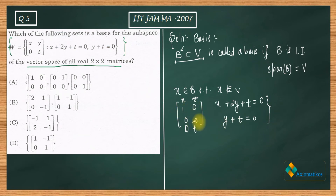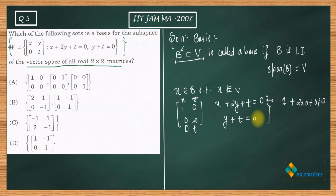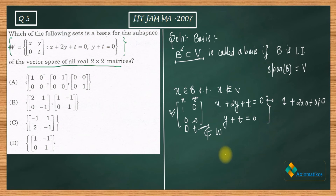Check whether the element [1,0;0,0] satisfies these properties: x + 2y + t = 1 + 2(0) + 0, which is not equal to zero. This condition is not satisfied, so this element does not belong to W. Since it is not inside W, option A cannot be a basis. Option A is incorrect.